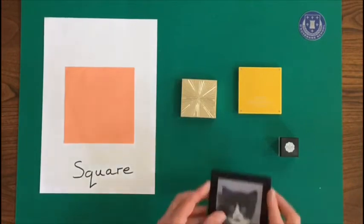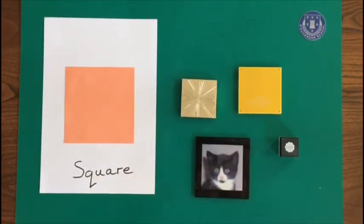And also found a coaster with a picture of my cat when he was a kitten. And again, four sides. One, two, three, four. And four corners. One, two, three, four. And that makes our square.